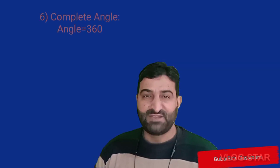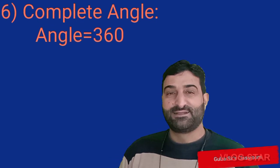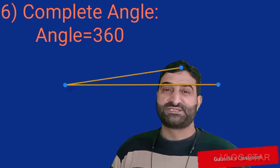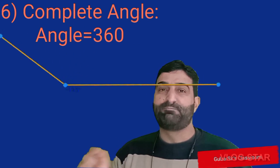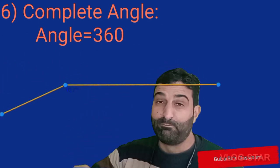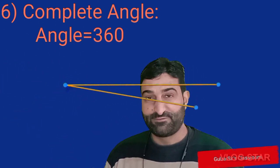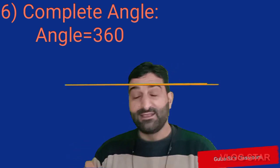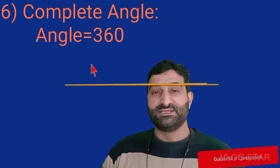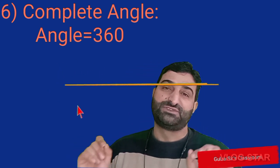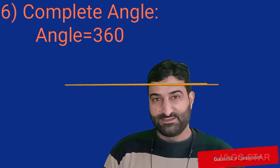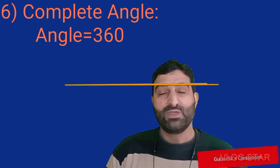Then finally we have the complete angle. As the name indicates, it is the angle subtended by the complete rotation of a ray. Or you can say an angle whose measure is equal to 360 degrees is called a complete angle.